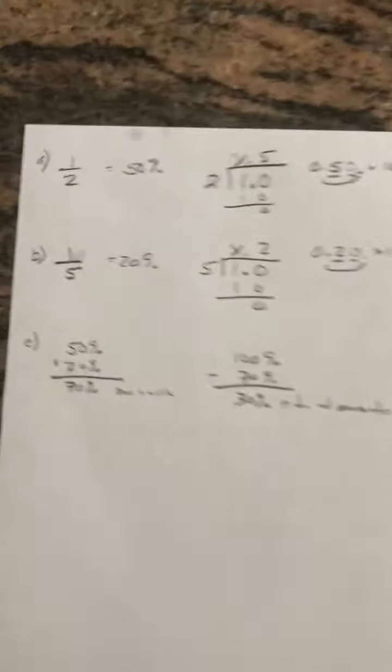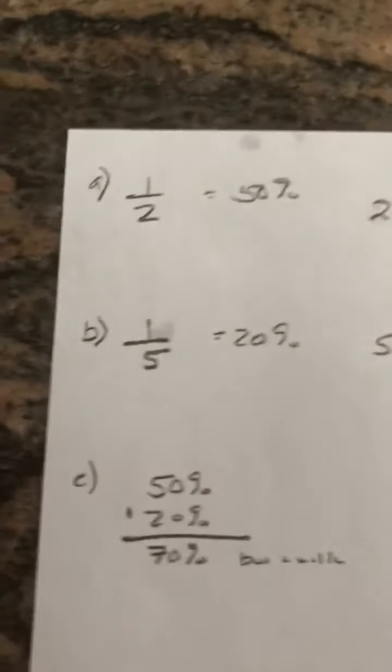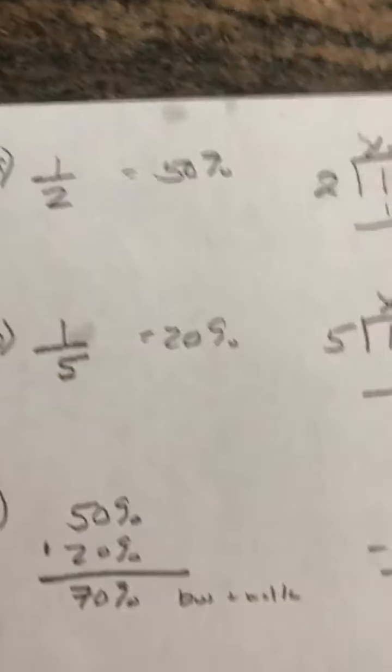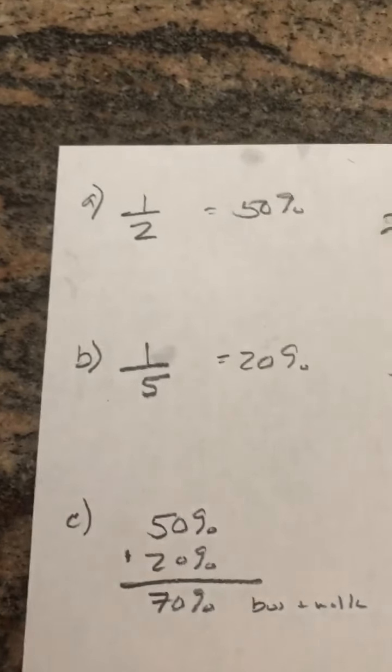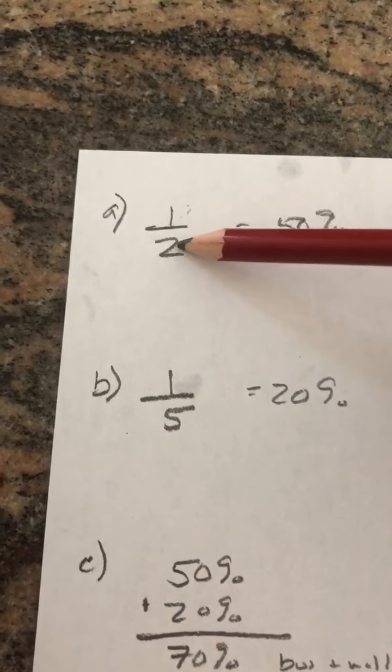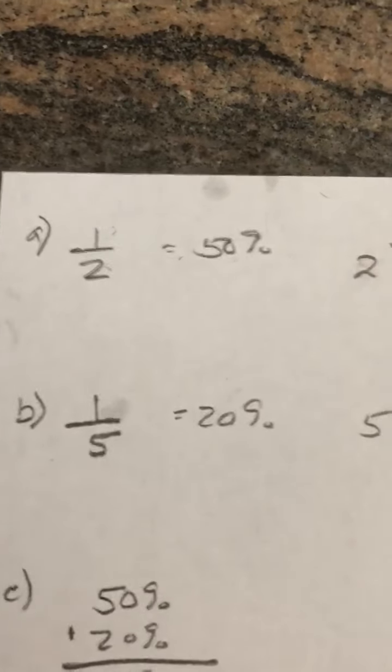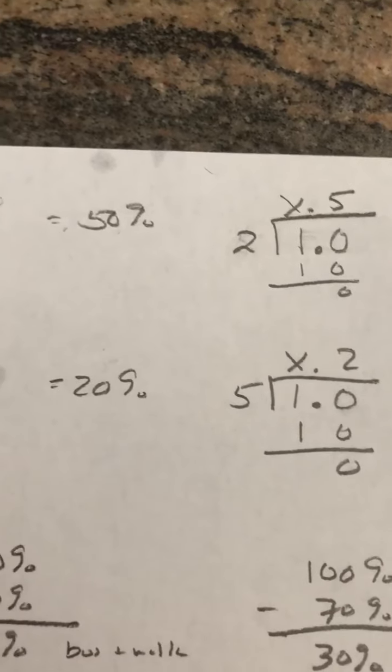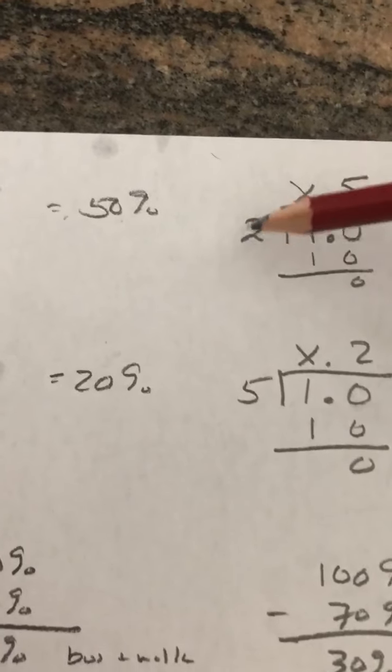So our solutions. The first one is definitely the easier of them. It says half of the students take the bus. So half can be written as a fraction and most of you will realize that a half is 50%, but how we would actually solve that and show your work is we would divide one by two.